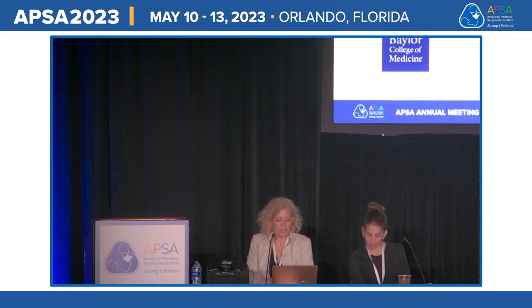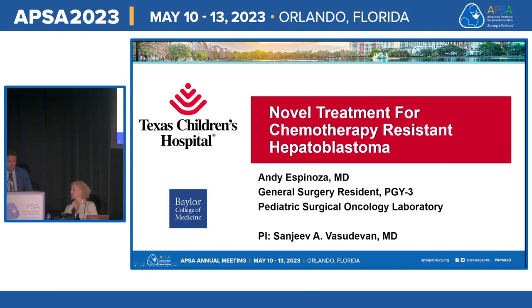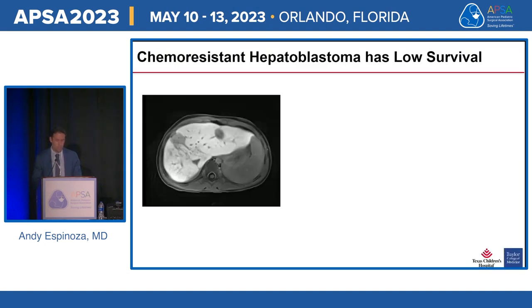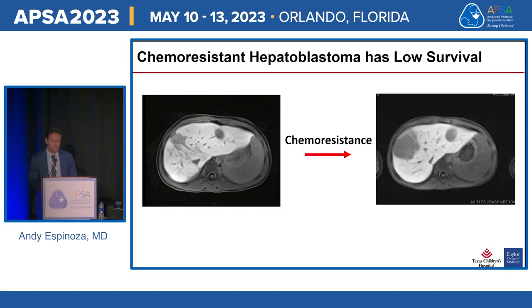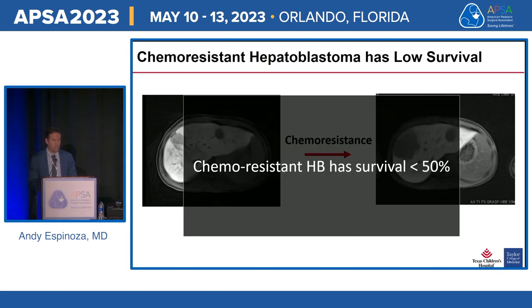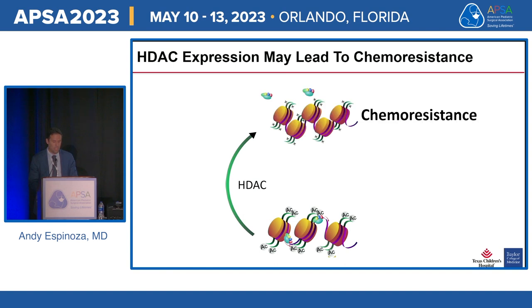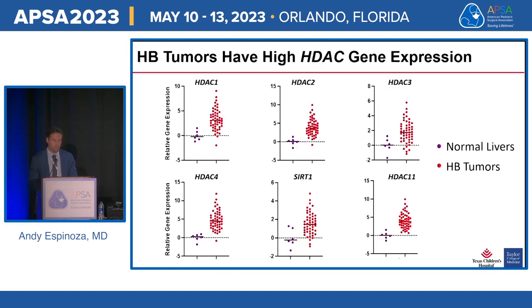Our next speaker is Dr. Andy Espinoza, discussing 'Preclinical Testing Pipeline Reveals Novel Treatment Strategies for Chemotherapy-Resistant Hepatoblastoma.' Hepatoblastoma is the most common liver malignancy in children. While low-risk patients have high survival rates, patients with chemo-resistant disease have high relapse and death rates — resulting in survival below 50%. One proposed mechanism of chemo-resistance is histone deacetylase, or HDAC, expression, which allows tumor cells to develop escape mechanisms. Since our group previously found hepatoblastoma tumors have elevated pan-HDAC expression, we sought to study pan-HDAC inhibition using panobinostat.